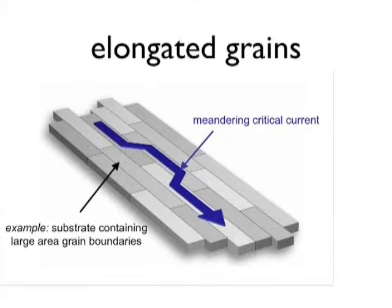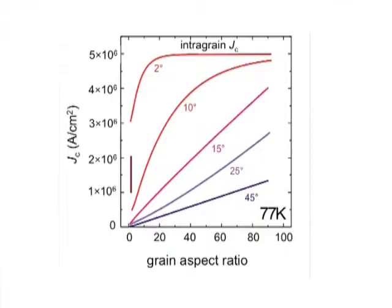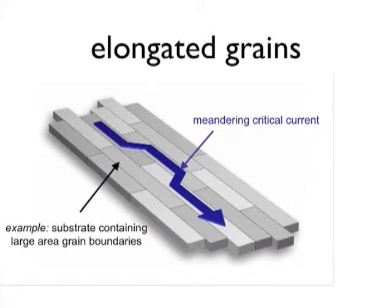This is having grains with a high aspect ratio, meaning elongated grains which are much longer than wide. If you have such elongated grains in the substrate of a coated conductor, you will introduce large grain boundary areas. This grain boundary can carry a large critical current because the area of the grain boundary is very large.